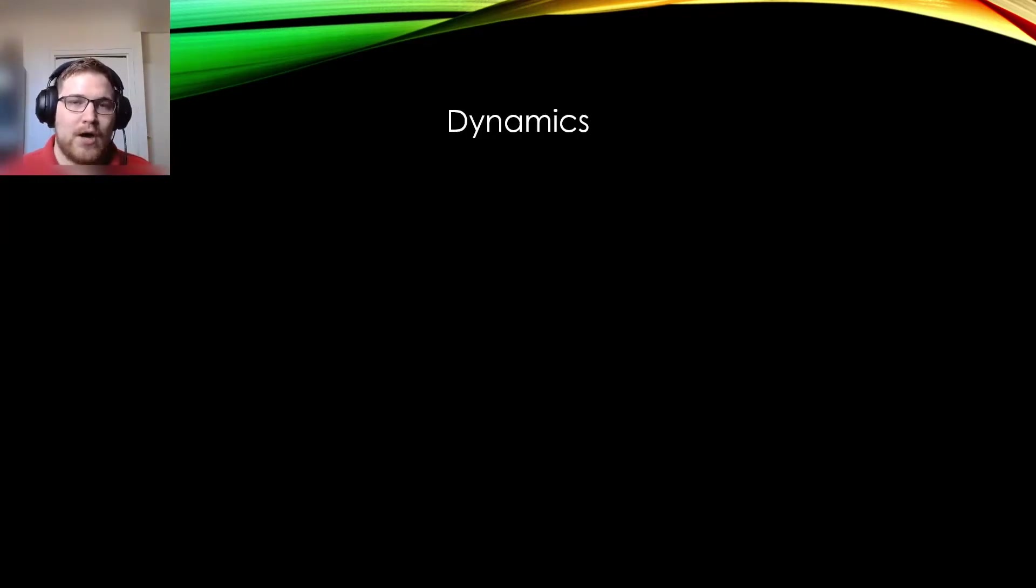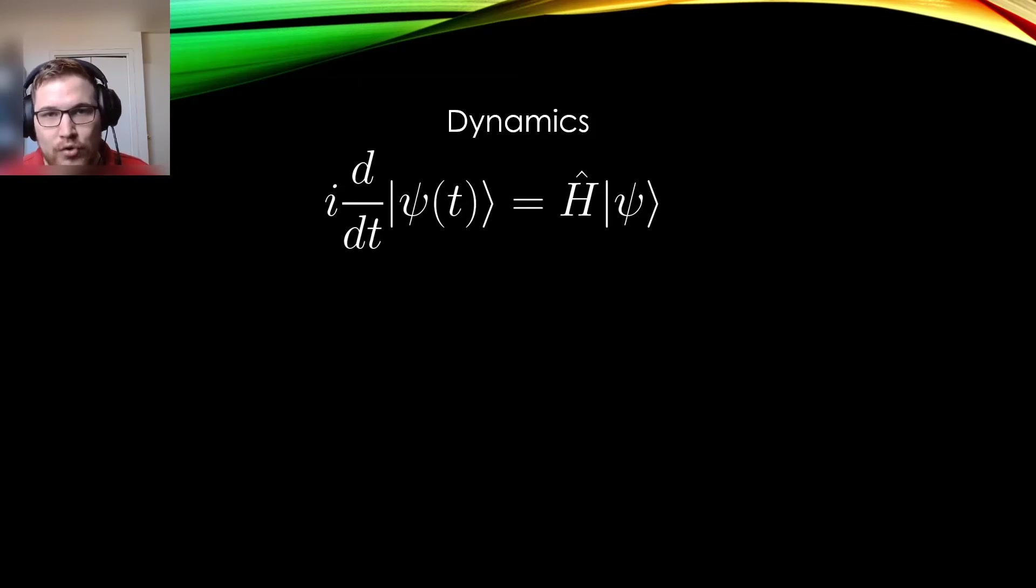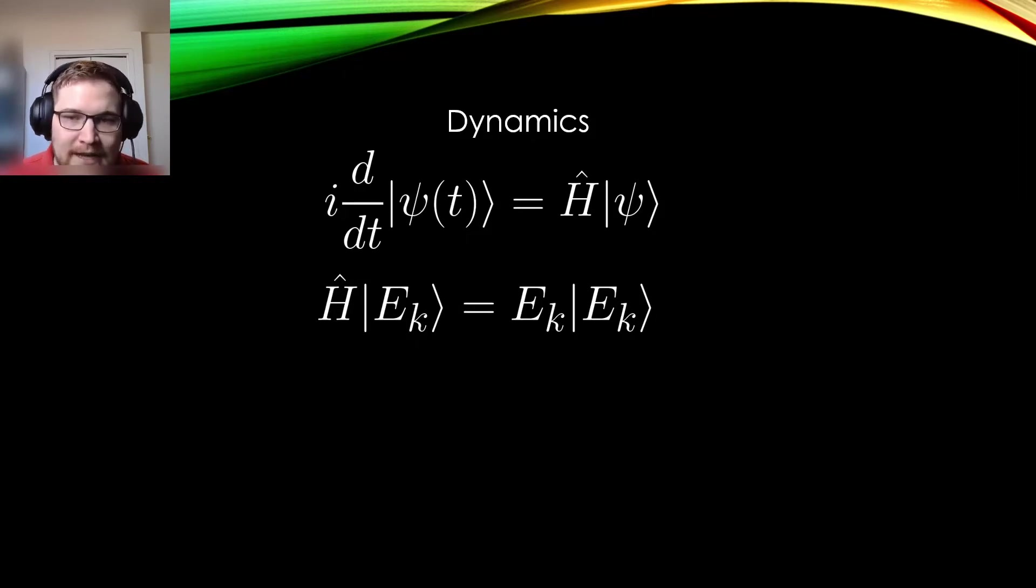If we want to study how a quantum system changes in time, we usually refer ourselves to the Schrodinger equation, where this operator H is called the Hamiltonian, and it tells us about the total energy in the system and how things in the system interact with each other. The easiest way to solve this problem is to first solve the eigenvalue problem, which involves finding the eigenvectors and the eigenvalues of the Hamiltonian H, where we label the different values of the eigenvalues and the eigenvectors with the label K.